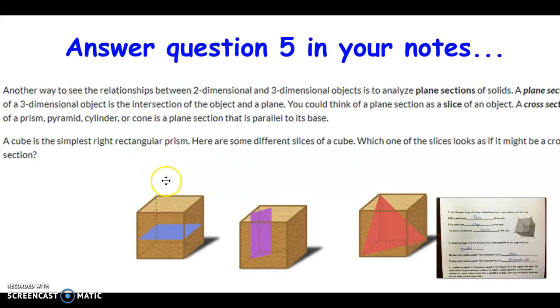Another way to see the relationship between two-dimensional and three-dimensional objects is to analyze what are called plane sections of solids. A plane section of a three-dimensional object is simply the intersection of that object and a plane. You can think of a plane section as a slice of the object, like you're cutting it with a knife. A cross section is a special plane section. It is when you take a plane section of a prism, pyramid, cylinder, or cone where it is parallel to the base. So if it's parallel to the base, it's called a cross section. If it's at a different angle, then it's called a plane section.